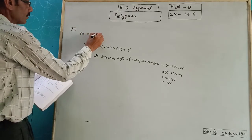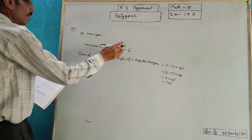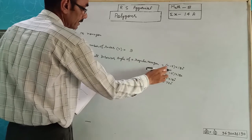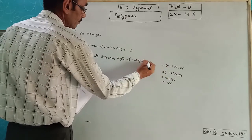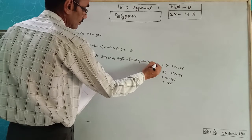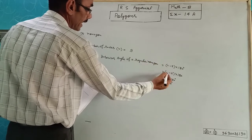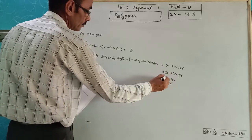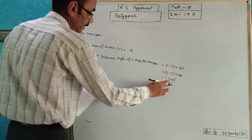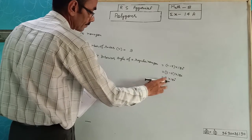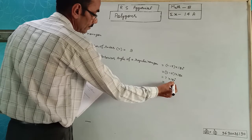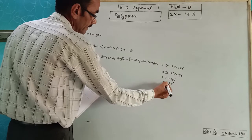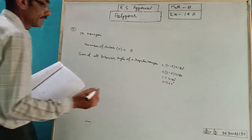Third part is nonagon. Nonagon has 9 sides. Change N value to 9: 9 minus 2 is 7, and 7 multiplied by 180 equals 1260 degrees.